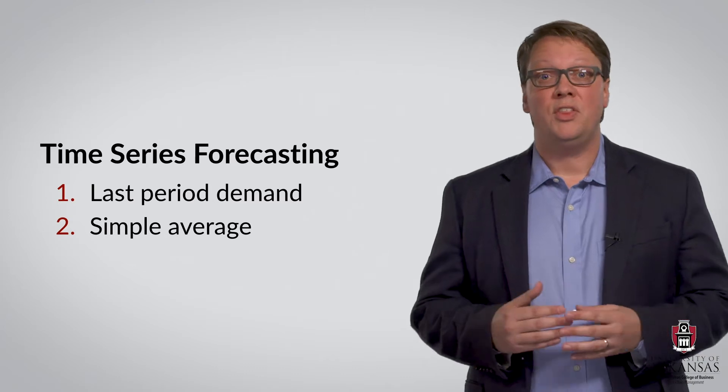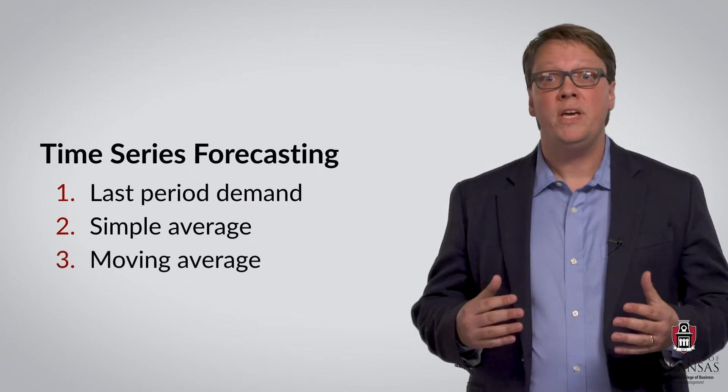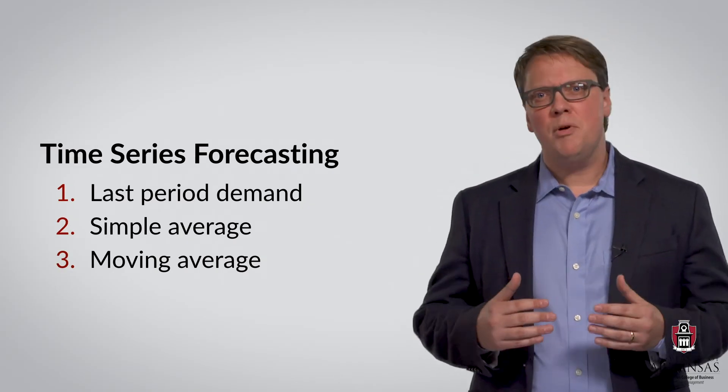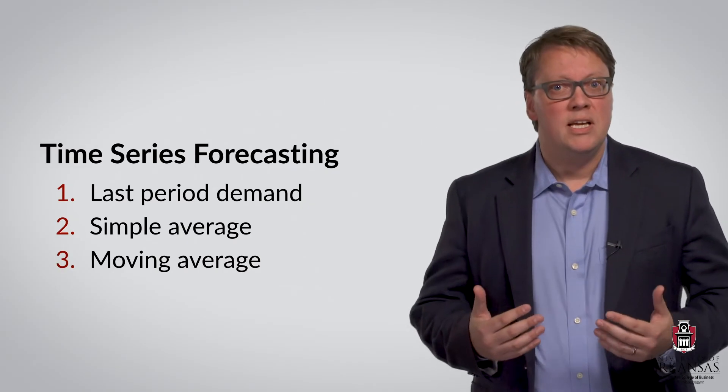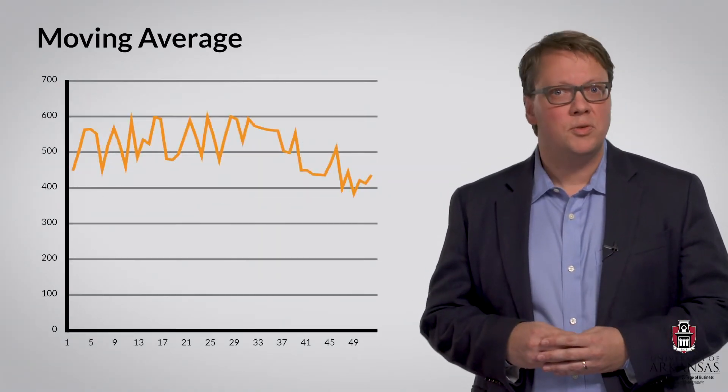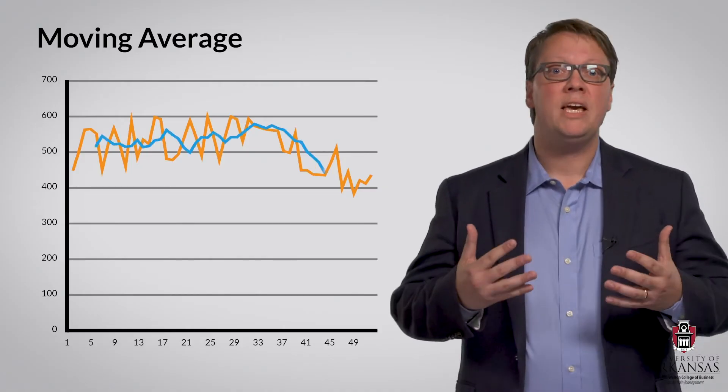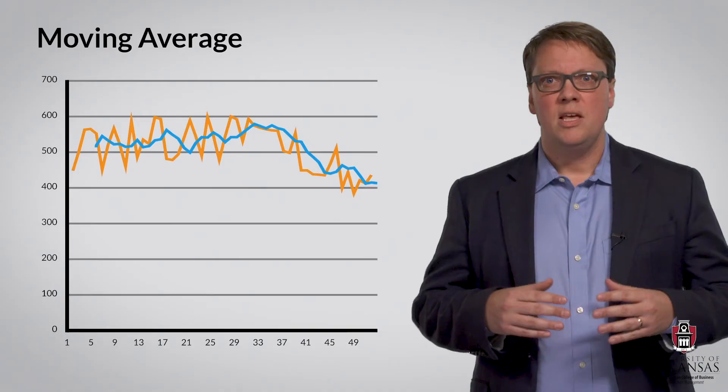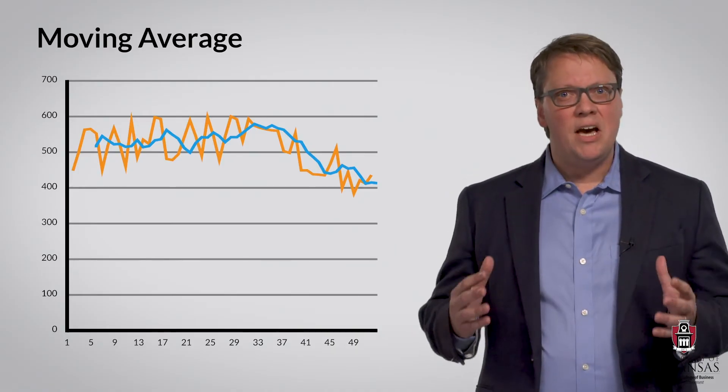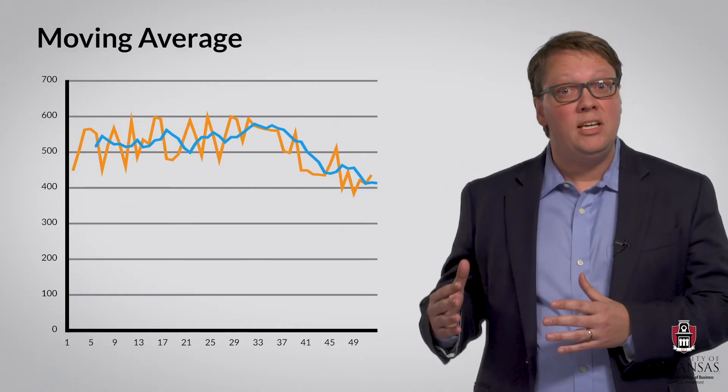Now, let's take a look at the third basic time series forecasting technique, the moving average forecasting method. Again, the name of this method is quite descriptive and tells us how this technique actually works. In this particular case, let's take the example of a four-week moving average forecast. In other words, we calculate a forecast as the average of the four weekly demand observations that precede the forecast.